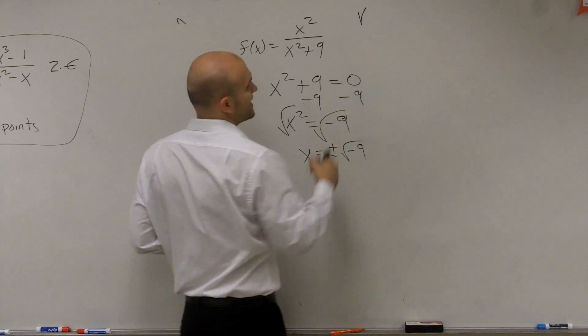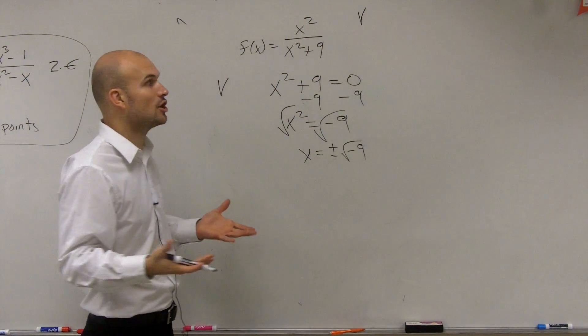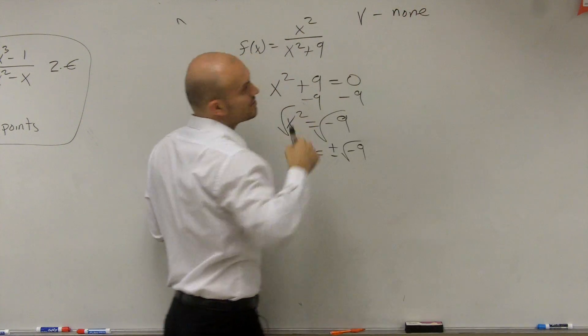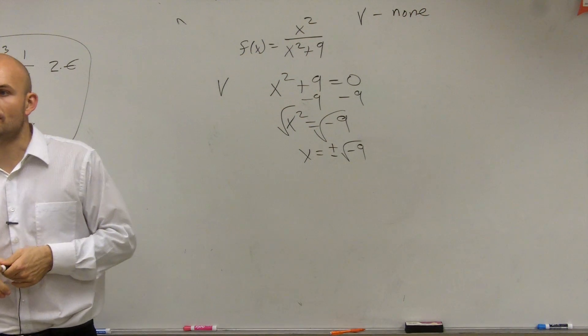No. So for a vertical, I'm sorry, not x-intercept, for an asymptote, we don't have any. So we're just going to say none. So there are no vertical asymptotes for this problem.